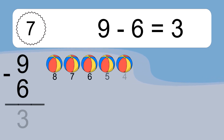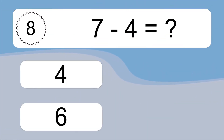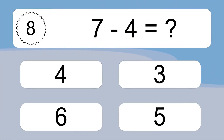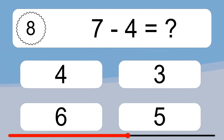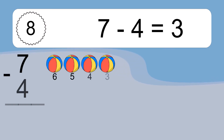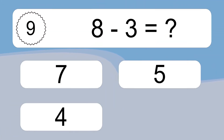9 minus 6 equals 3. Let's count it: 8, 7, 6, 5, 4, 3. 7 minus 4 equals what? 7 minus 4 equals 3. Let's count it: 6, 5, 4, 3. 8 minus 3 equals what?